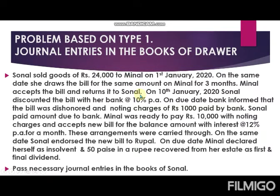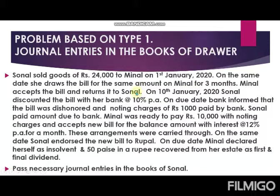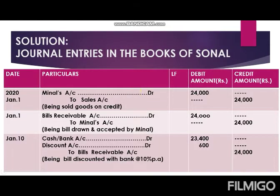For these two sentences, note from where to where I read the transaction and pass the entry. The first line gave us information about credit sales. Then reading the next two sentences — 'on the same date she draws the bill for the same amount on Minal for three months, Minal accepts the bill and returns it to Sonal' — we come to know this is the second transaction between Sonal and Minal, which is bill drawn and accepted.